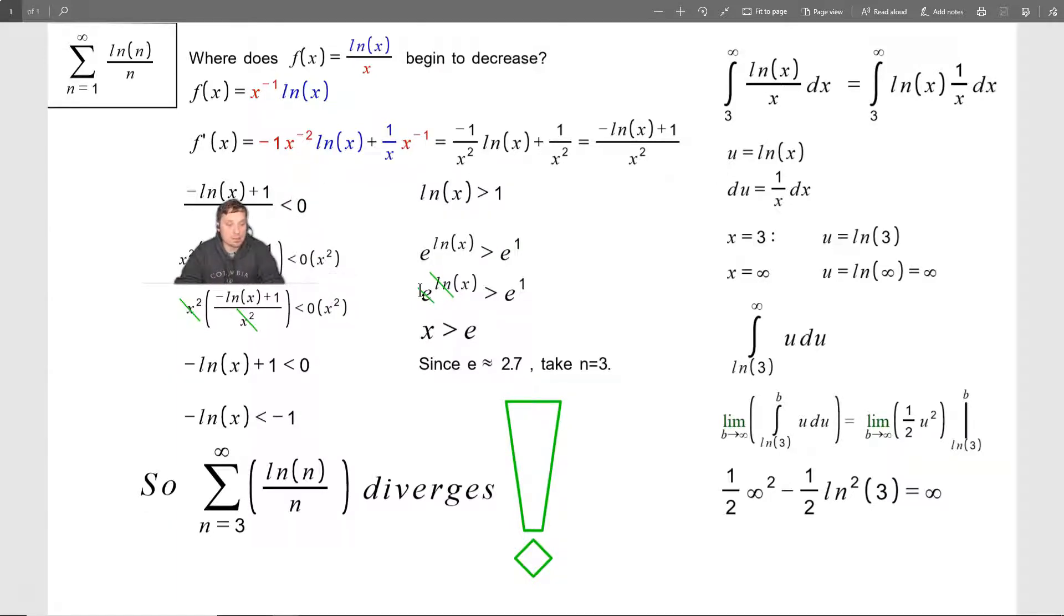So here I need to solve this inequality. Negative ln of x plus 1 over x squared is less than 0. So what I'm going to do is I'm going to multiply both sides by x squared. So x squared on the outside here and also x squared over here in that position. So now we'll have cancel off x squared here and x squared here.